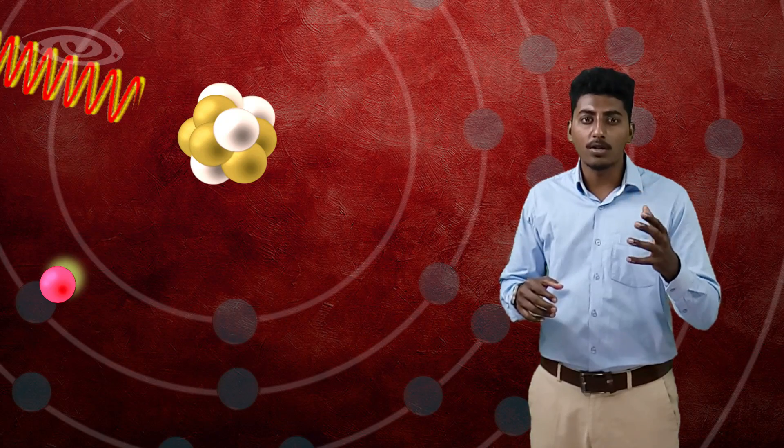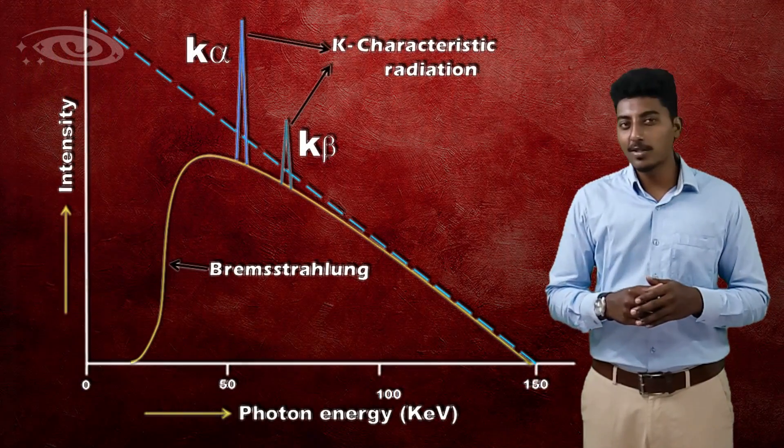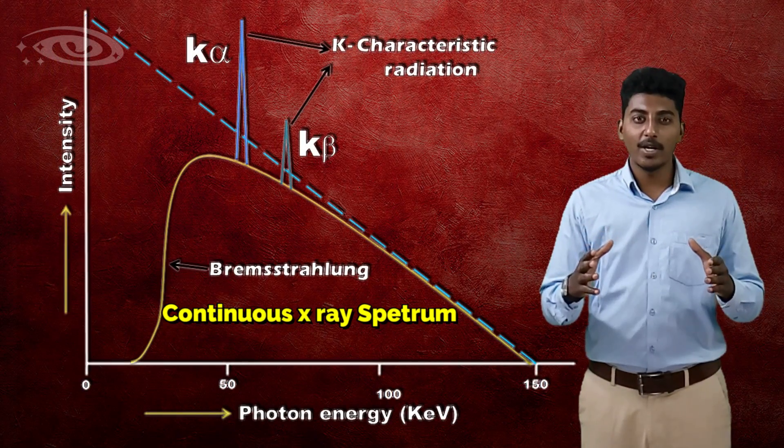This bremsstrahlung is also called continuous x-ray and white radiation. This is about the bremsstrahlung interaction, and like this, bremsstrahlung x-rays are propagated. That's it about the interactions.